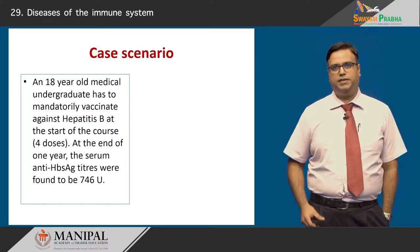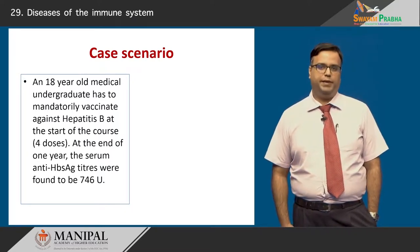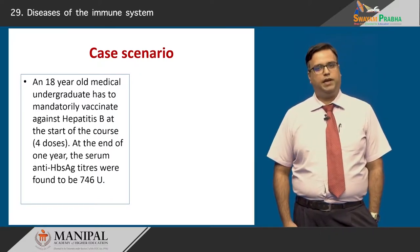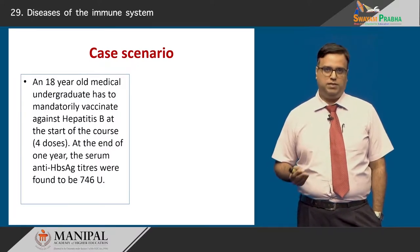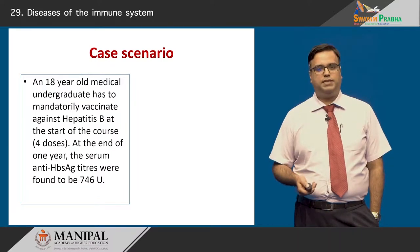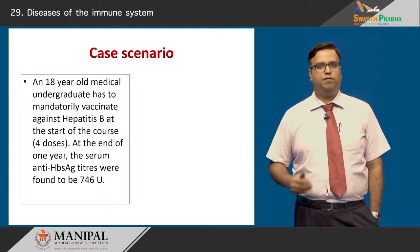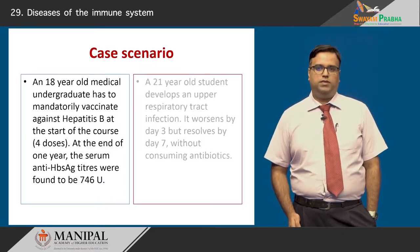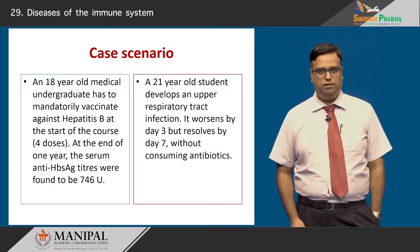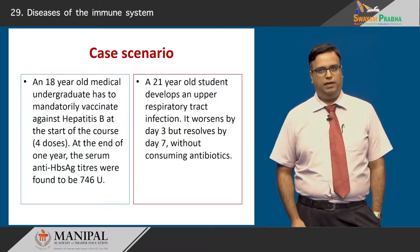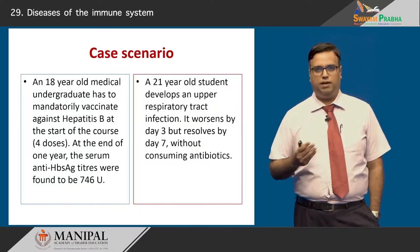Let us take a couple of case vignettes to better understand the physiology of these cells and how they partake in the immune process. The first scenario is an 18-year-old medical undergraduate who was mandatorily vaccinated against hepatitis B at the start of their course. The primary course is three doses plus two boosters. At the end of one year, serum anti-HBsAg titers were found to be 746 — more than 10 is considered protective. The second scenario is a 21-year-old student who develops an upper respiratory tract infection. The catarrhal phase worsened up to day 3, and by day 7 the infection resolved without any need for antibiotics.